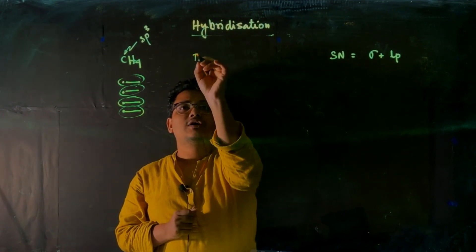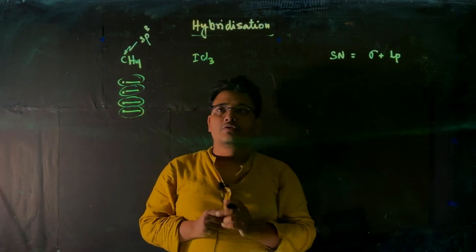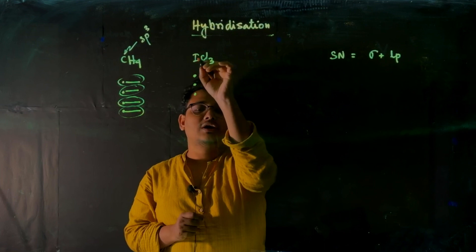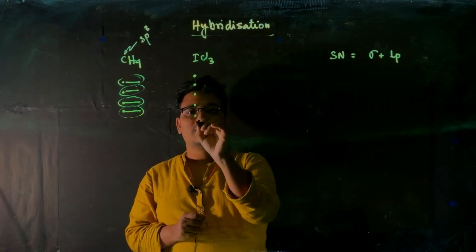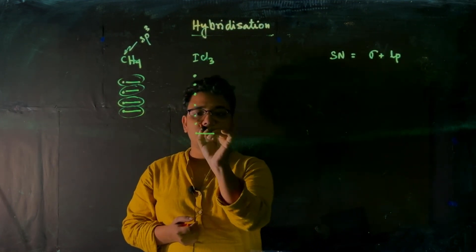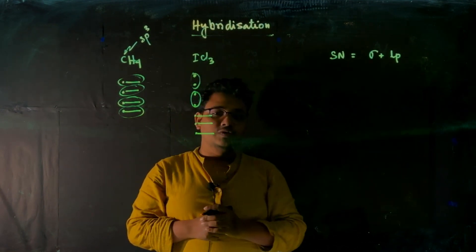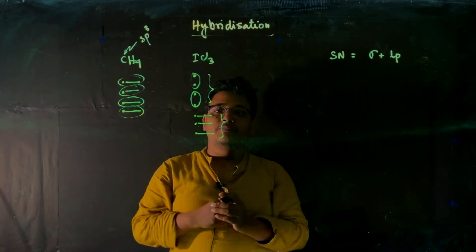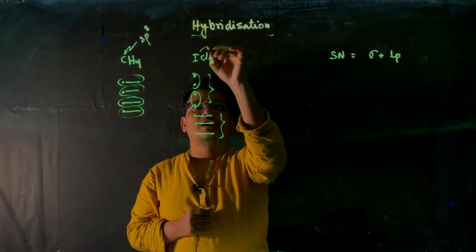Now consider another example: ICl₃, where iodine is the central atom. Iodine has seven valence electrons, and it forms three sigma bonds with chlorine. The remaining electrons form two lone pairs. So the total steric number here is three sigma bonds plus two lone pairs, giving a steric number of five, and the hybridization will be sp³d.